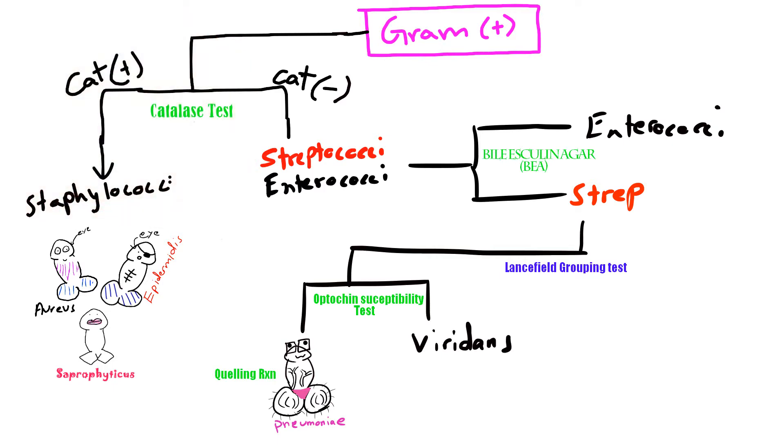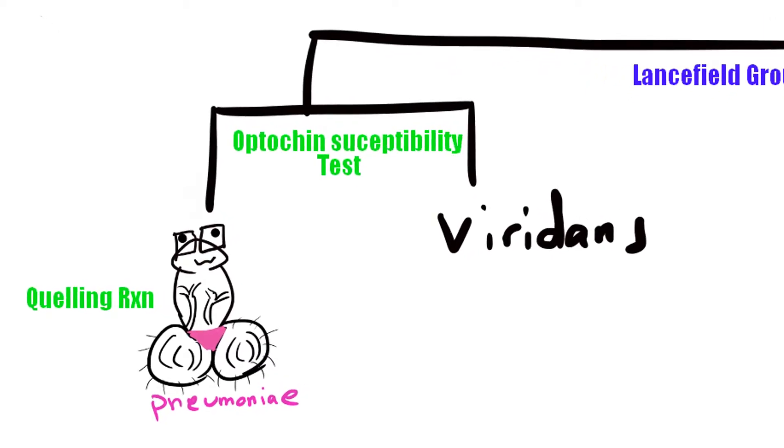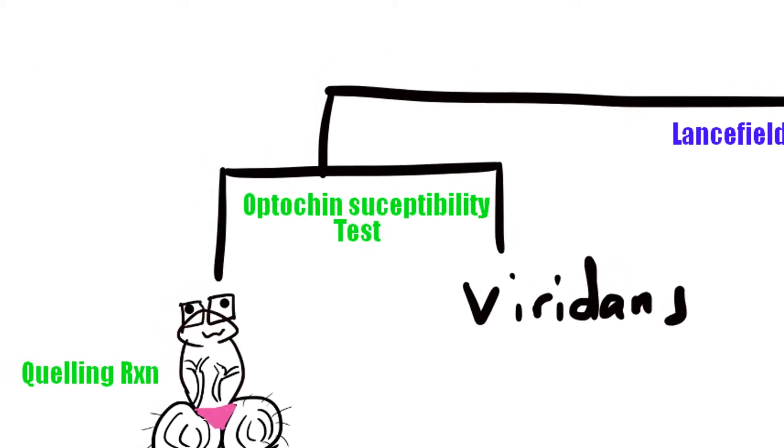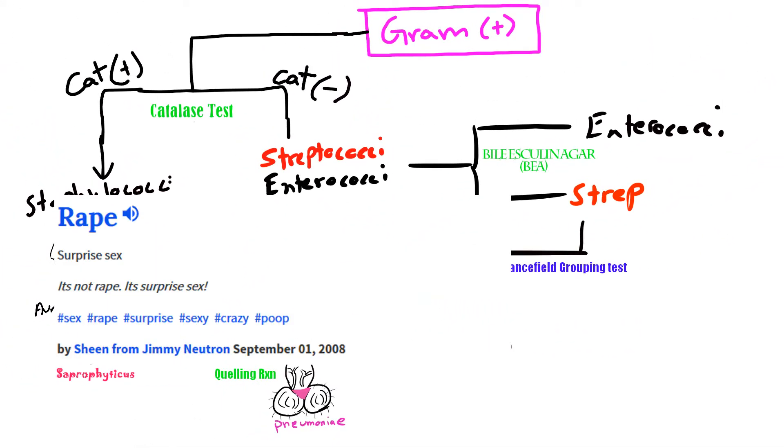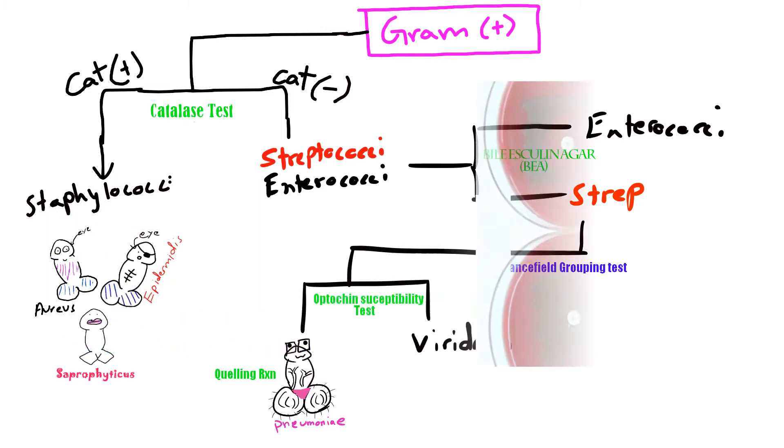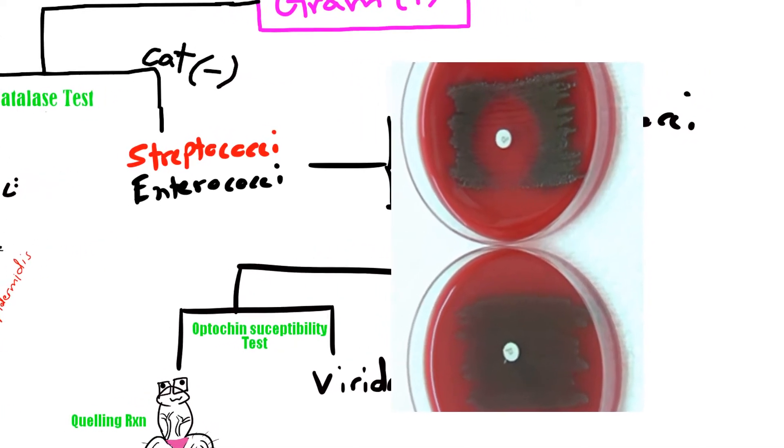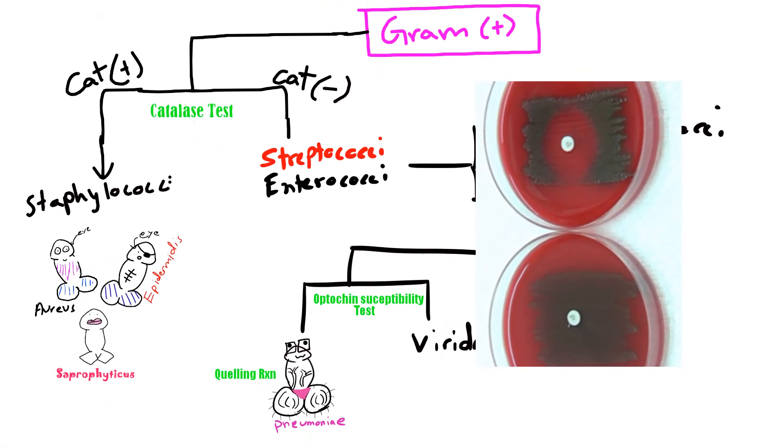We eventually need to distinguish streptococcus pneumoniae from the viridans streptococci, and we can do that with the optochin susceptibility test. Optochin is just a toxic chemical, and it pretty much rapes streptococci, especially streptococci pneumoniae, compared to the other streptococci species. So it is sensitive, aka susceptible, to the test, and it won't grow. And we know this by seeing the zone of inhibition surrounding the paper optochin disc.